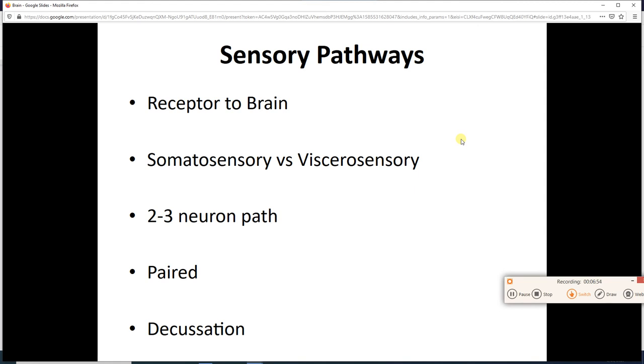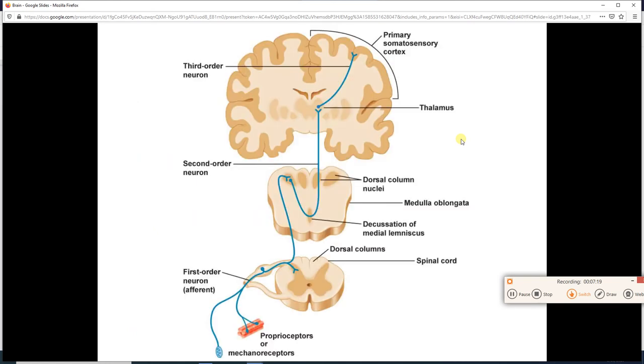Typically, it is two or three neurons on this path. It is paired, meaning that we've got a left path and a right path. Decussation is going to happen because if something happens on the right side of the body, if I slap my right arm, it's my left cerebral cortex where that info is going. That crossing of sides is called a decussation.